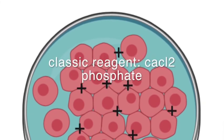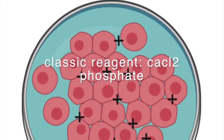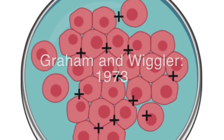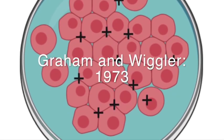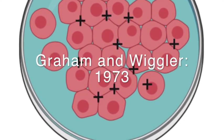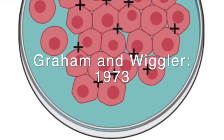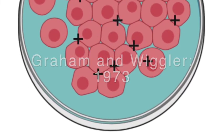The classic reagent that was used was introduced back in 1973 by Graham and van der Eb, and it's calcium phosphate transfection. It's a very cheap reagent and it's available in most labs.